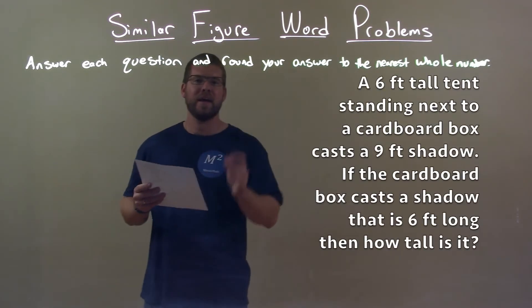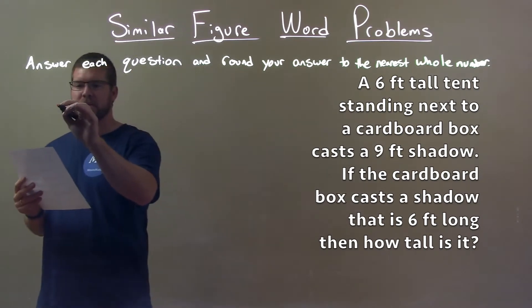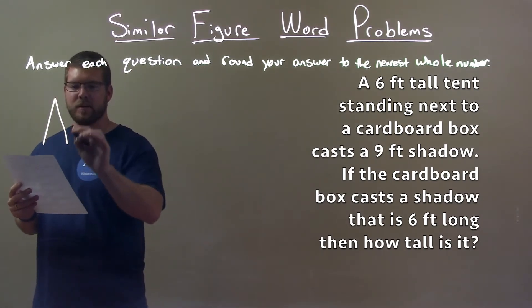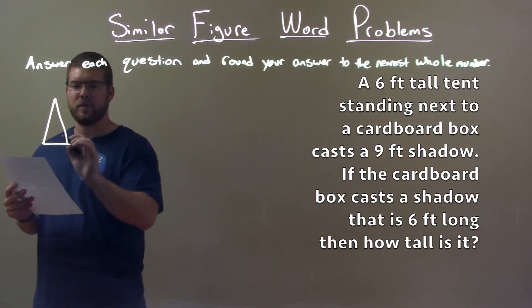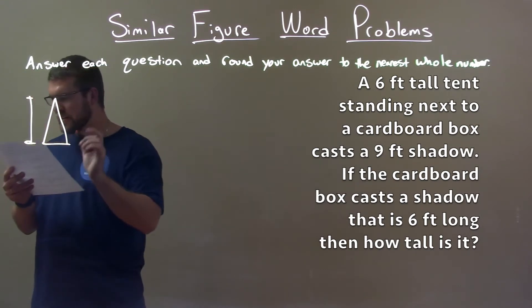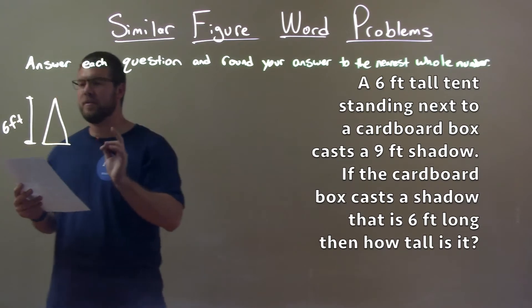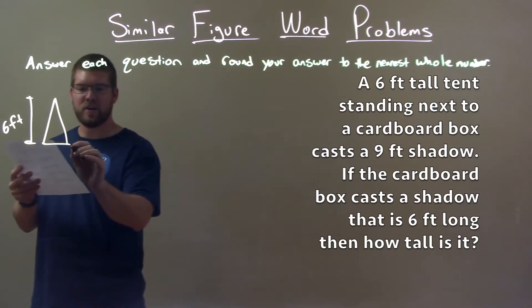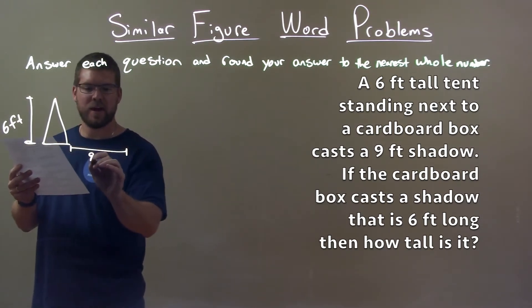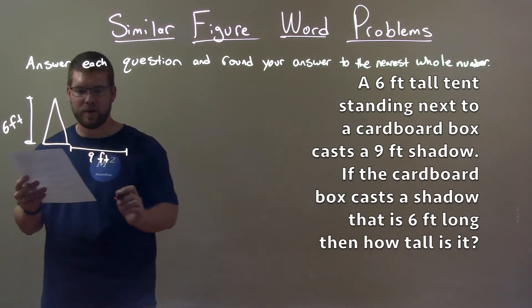So we have the tent and the box. Let's draw a tent here, it's like a triangle tent. And they said that tent here is six feet tall. And it casts a shadow that is nine feet, a nine foot shadow there.